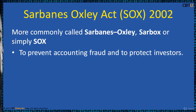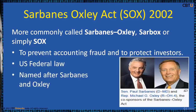SOX 2002 is also known as the Public Company Accounting Reform and Investor Protection Act, and the Corporate and Auditing Accountability, Responsibility and Transparency Act. It is a United States federal law that set new or expanded requirements for all US public company boards, management, and public accounting firms. There are also provisions for privately held companies, for example regarding willful destruction of evidence to impede federal investigation. The bill contains 11 sections and was enacted as a reaction to major corporate and accounting scandals including Enron and WorldCom.